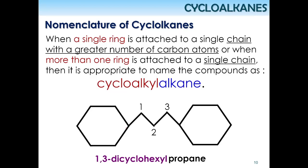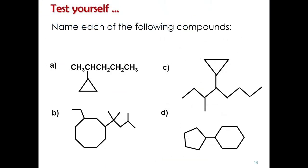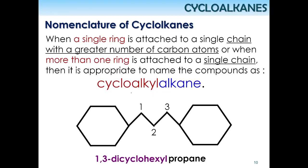When more than one ring is attached to a single chain, the same naming rule applies — name it as cycloalkylalkane — even if the chain is shorter. For a chain of three carbons — propane — with two cyclohexyl groups attached, we name it as dicyclohexylpropane. The rings are attached at carbons one and three, giving 1,3-dicyclohexylpropane.